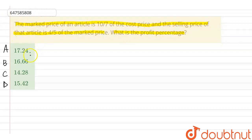The options are: option A, 17.24; option B, 16.66; option C, 14.28; and option D, 15.42, right?